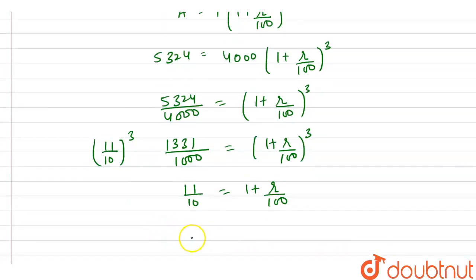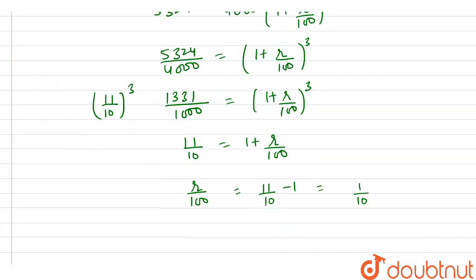From here we can say that R by 100 equals 11 by 10 minus 1 which equals 1 by 10. So from here we can say that here this 10, this 10 get cancelled with this and we can say that here our R equals 10 percent and hence we can say that this is our final answer.